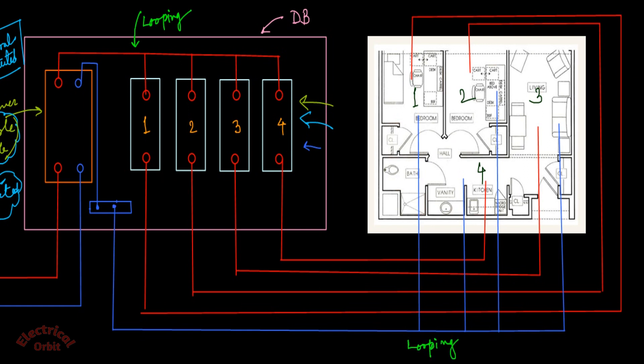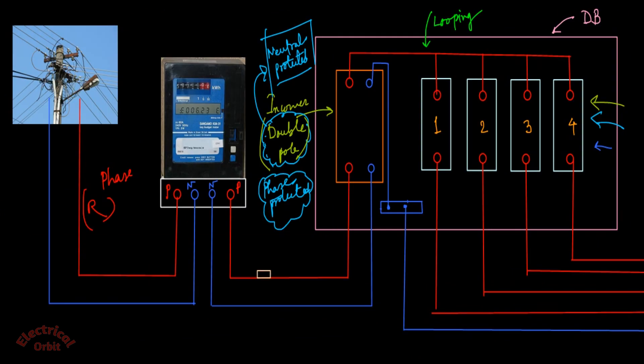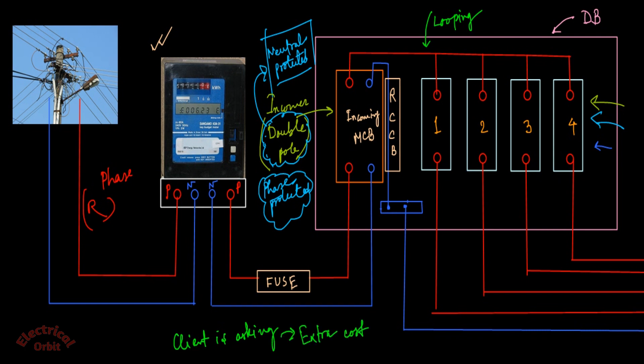One thing I have to mention here is before connecting the phase part between the energy meter and the incoming MCB, there should be a fuse connected in between. Again, there may be an RCCB or residual current circuit breaker between the incoming MCB and the outgoing MCBs in order to protect the neutral. But it purely depends upon whether the client is asking you to do so, because it adds extra cost. In most cases these are usually not used unless the client asks. I will make a different dedicated lecture for RCCB and its function and connectivity.